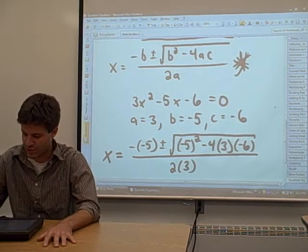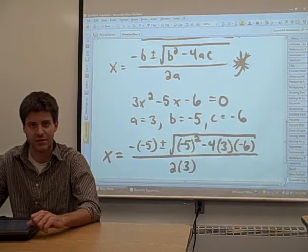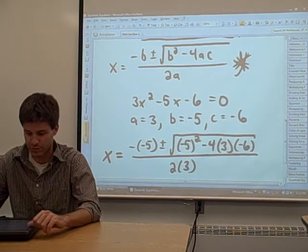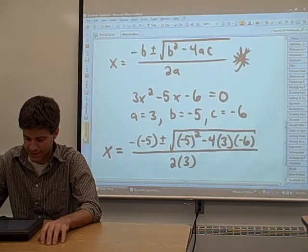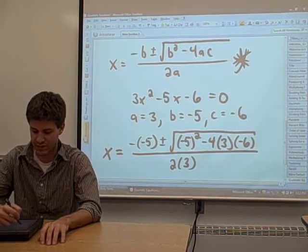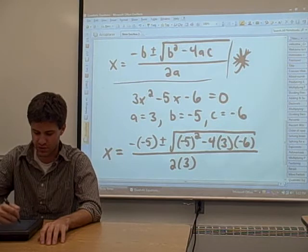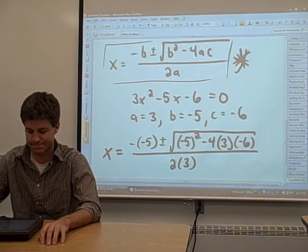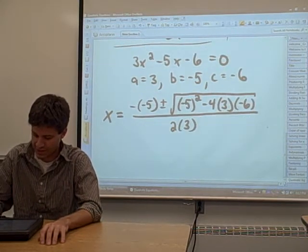Then what we did is we said, well, we know the answer to this. We just have to plug it into this formula that we're given, the quadratic formula, to solve for x. We took all of our A's, B's, and C's and plugged them in to this big mess of an equation up here. We did that, and we got this result.